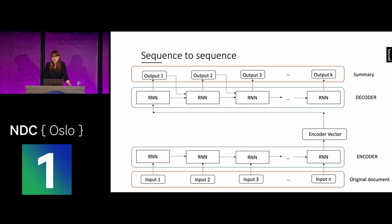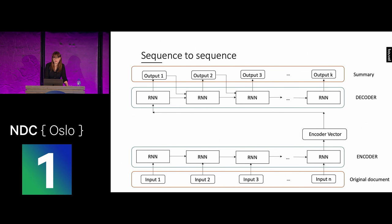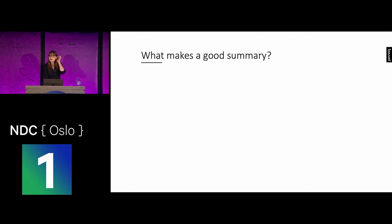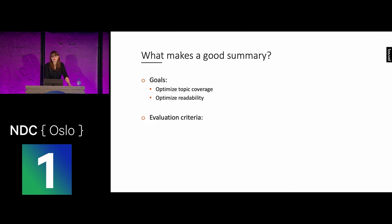There is much more going on in the sequence-to-sequence method and it is not the only way to do automatic abstractive summarization — there are other methods including reinforcement learning. This is an area improving every day, with new algorithms coming, and it's going to get much better with time. The last part of this talk is about evaluation: now that we know how to create summaries, how do we know if they are good?